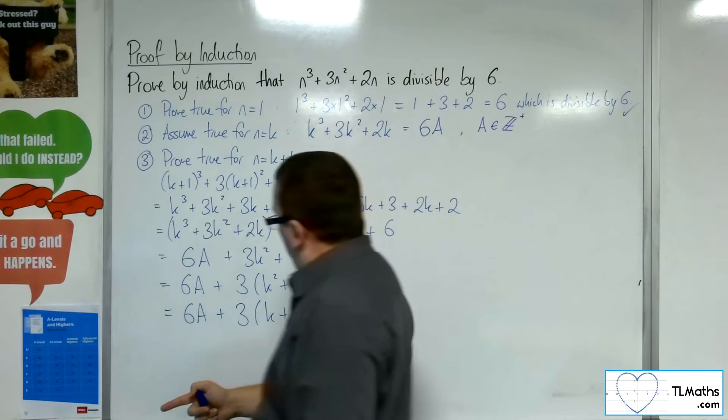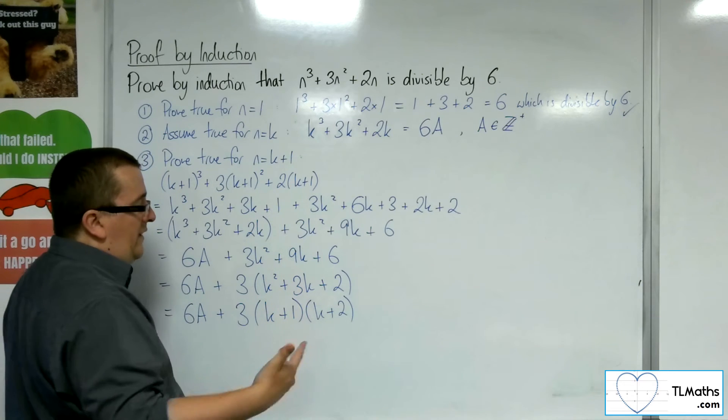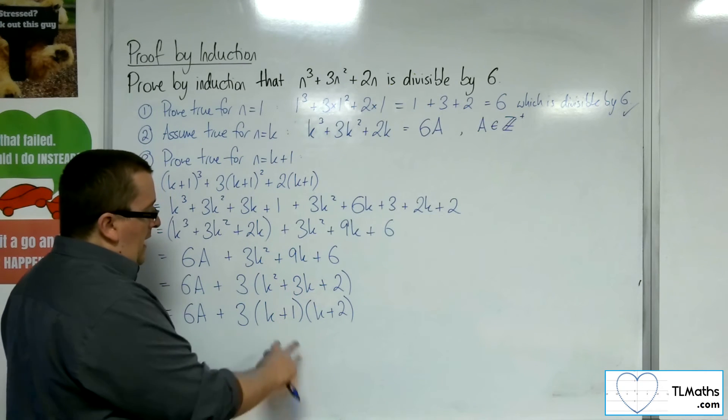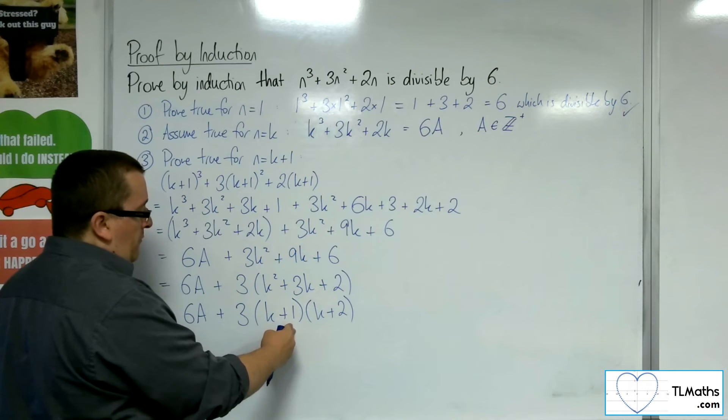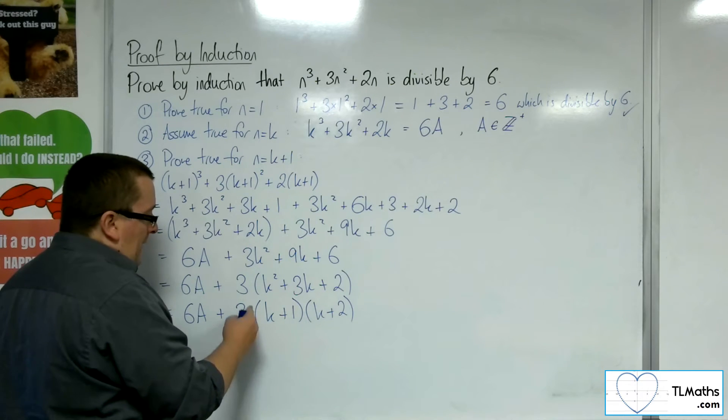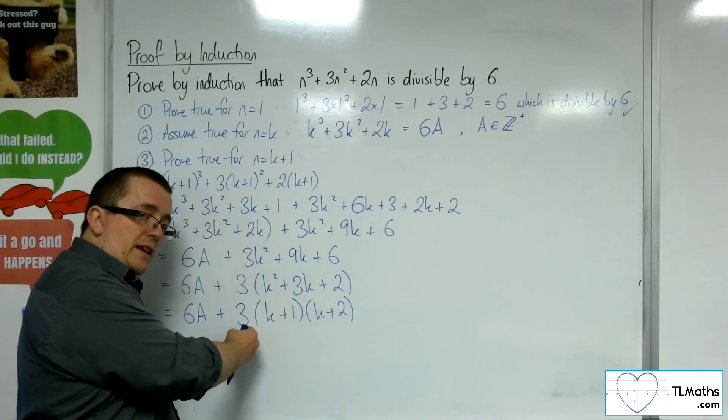So, if we've got k plus 1 is even, then this has a factor of 2, which means I could factor the 2 out, and then I've got my 6. So, I've got 3 times 2 is 6.